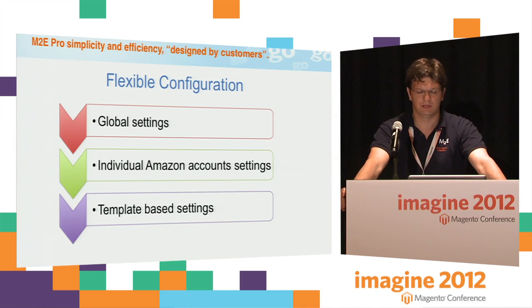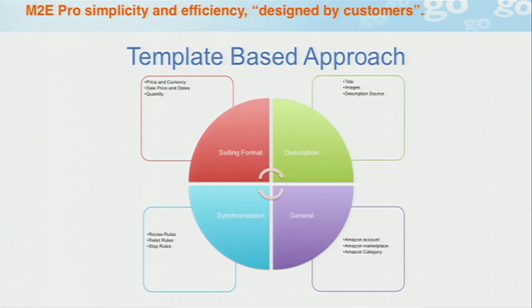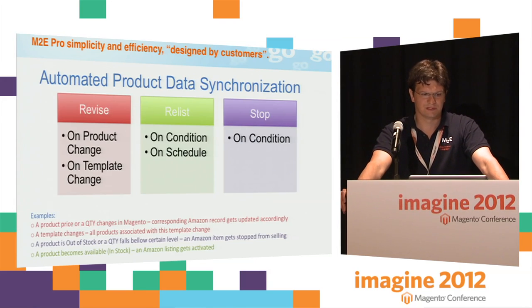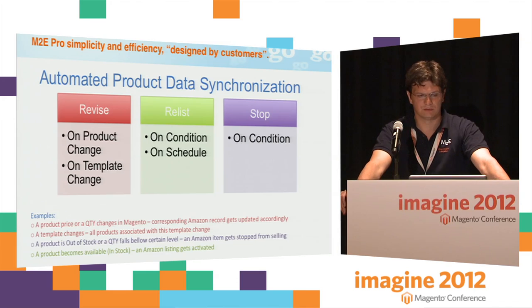We have three layers of configuration, similar to our existing M2E Pro eBay system. We have global settings configuration where you define global settings and can define different Amazon accounts differently, or define different products in terms of how to be sold or displayed on Amazon. In our template-based approach, for a product to be listed, you need to define selling rules, describe the product, specify general information, and give the system ideas about how to automate product management during the lifecycle on Amazon. For example, whenever you change a price in Magento, sometimes you want that to reflect on Amazon — you create a revise rule. If you run out of stock, you want to stop selling — that's a stop rule. When you receive more goods, you may want to start selling again — that's a relist rule.